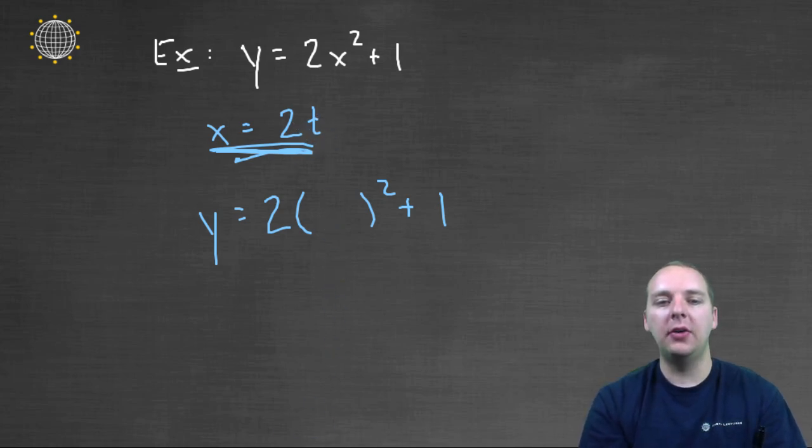We'll substitute that value in for x, in this case 2t, and then we'll see how everything plays out. In this case y would be, let's see, 2t squared is 4t squared, and 4 times 2 makes 8t squared plus 1.